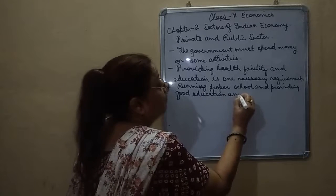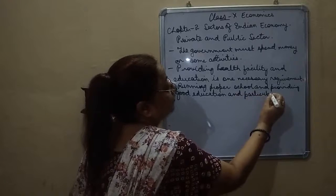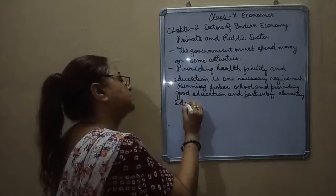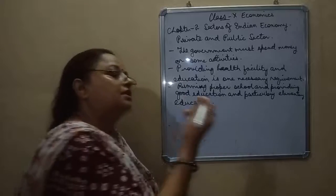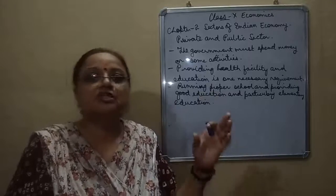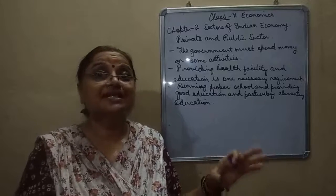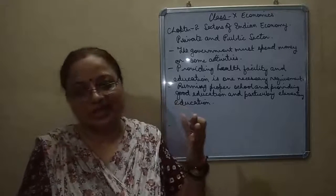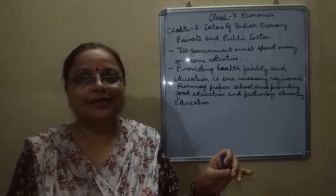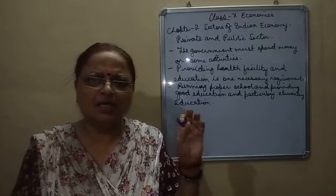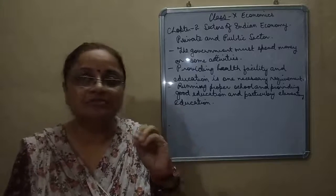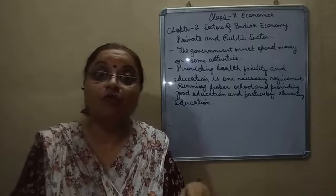Particularly elementary education — meaning the initial years, classes one to five — is critical. When a child is educated until class fifth, you cannot ask that child to do labor work. The child will oppose it. We need to be very particular about childhood education — if children get educated, the country will definitely progress.